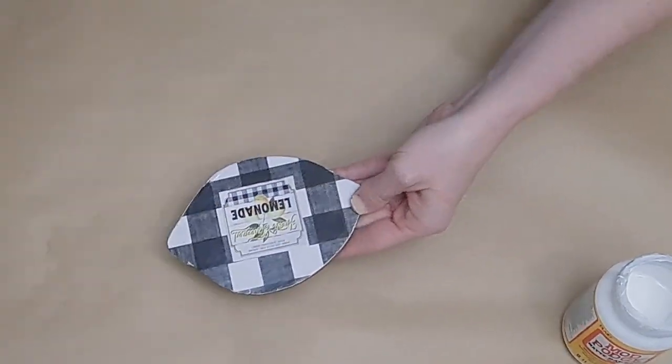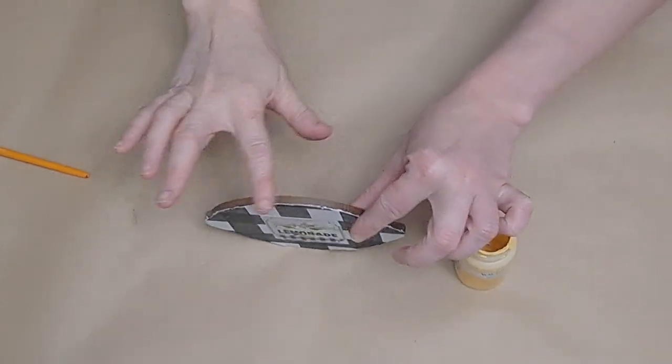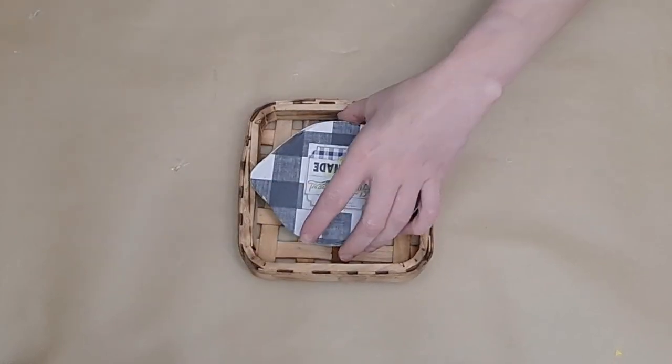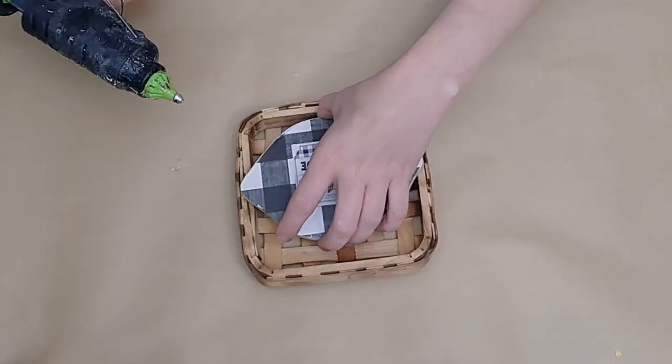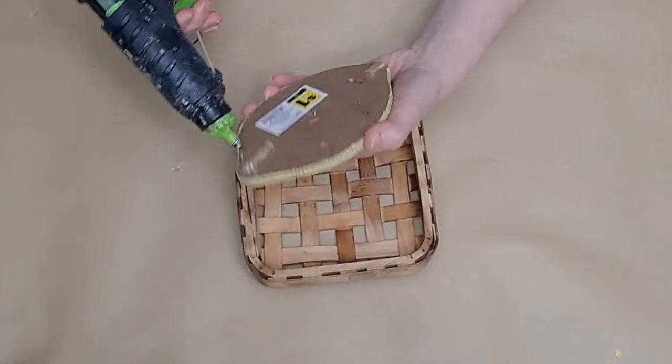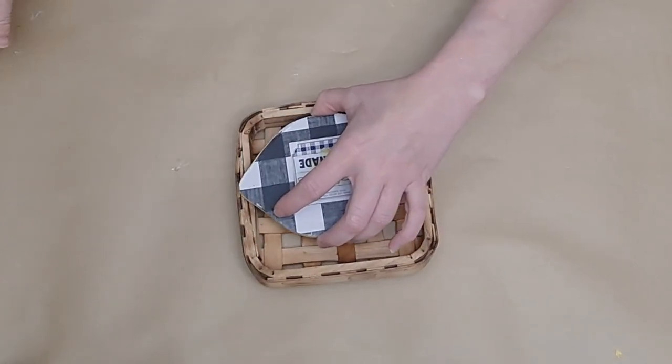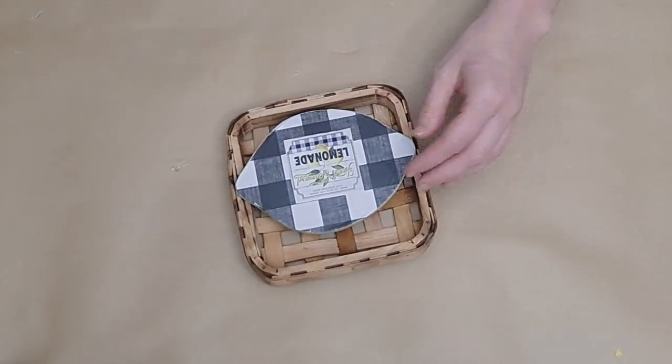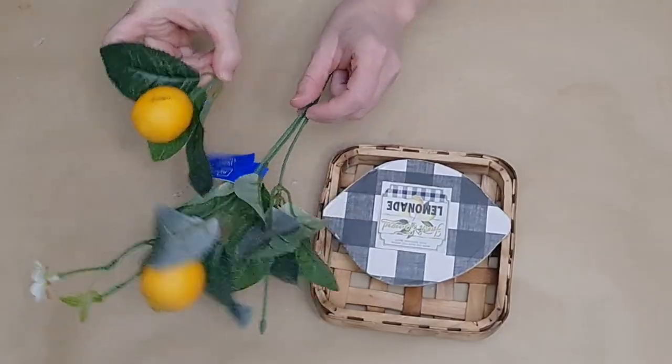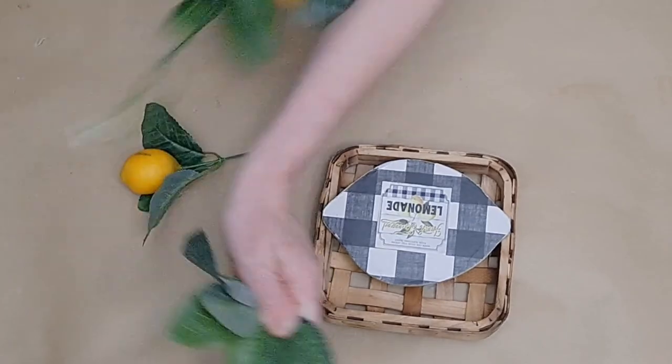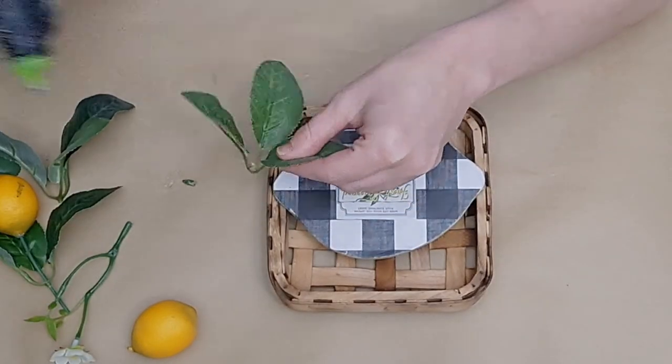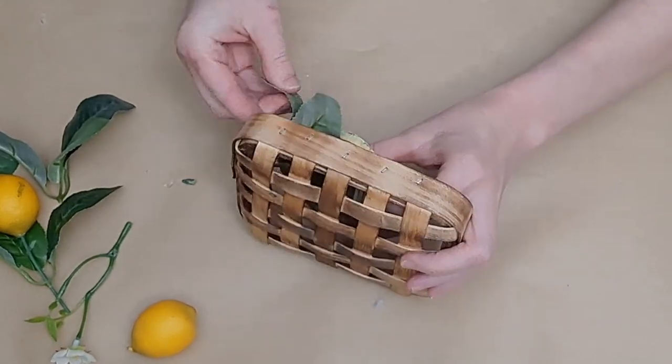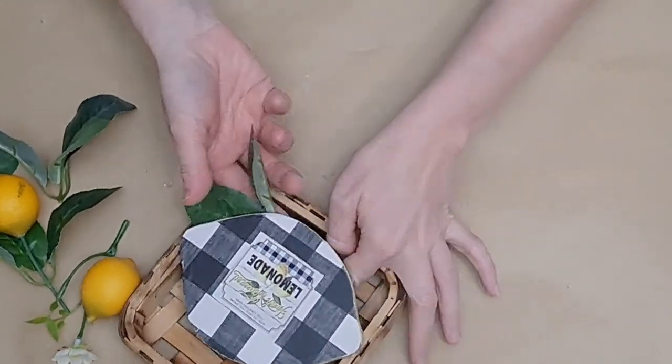I'm going to allow that coat of Mod Podge to dry. Now, I did decide I needed to go in and paint the sides of this with some Waverly Maize chalk paint. I just didn't like that MDF color showing, but that is optional. Purchased this basket at Hobby Lobby. It was $3.99 and 40% off, so right about $2. And I'm just going to put some glue on the back of my Buffalo check lemon on either side and tack it down on the front of this basket. So, we're a little bit over $3 so far.